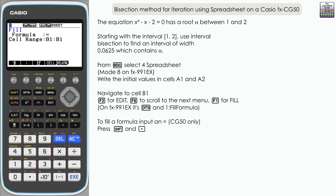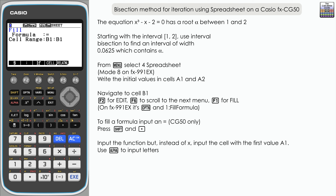We're going to copy out the function, but instead of writing X we're going to write the location of the first cell where our first value is. Our first value is 1 and that is in cell A1. So where we've got X, we reference cell A1 — using the Alpha button: Alpha A1 cubed, minus A1, minus 2. Then press Execute to confirm, so it is the function in place as a formula referencing values from column A going forward.